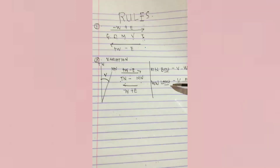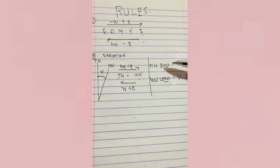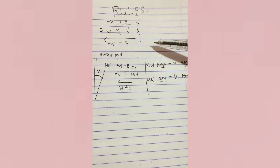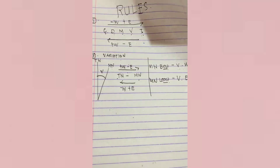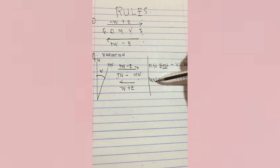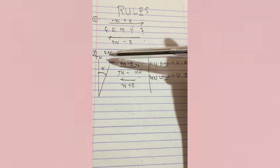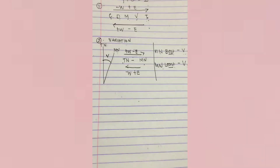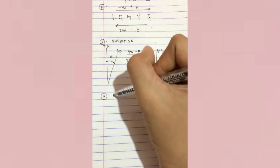What do we mean by best and least? If the value of the magnetic north is greater than the value of our true north, the direction of our variation is west. If the value of our magnetic north is less than the value of our true north, the direction of our variation is east. That is the second rule. The third rule is about deviation.